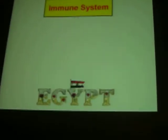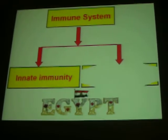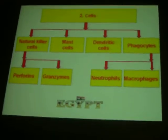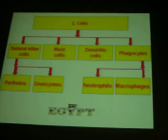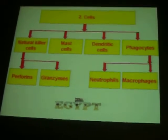The immune system consists of two areas: innate immunity and acquired adaptive immunity. Innate immunity consists of four categories: natural barriers, cells, toll-like receptors (TLR), and natural antibodies. Natural barriers include skin and physiological factors such as pH, temperature, oxygen tension, lysozyme, and phagocytic cells. Cells of innate immunity include natural killer cells, mast cells, dendritic cells, and phagocytes. Natural killer cells contain perforins, granzymes, and phagocytes include neutrophils and macrophages.